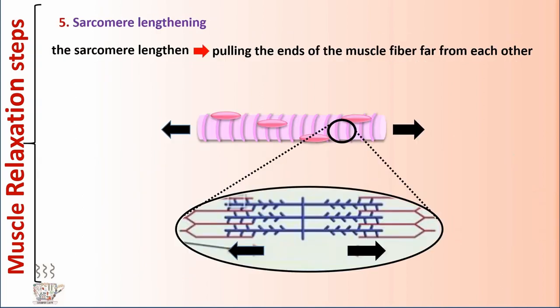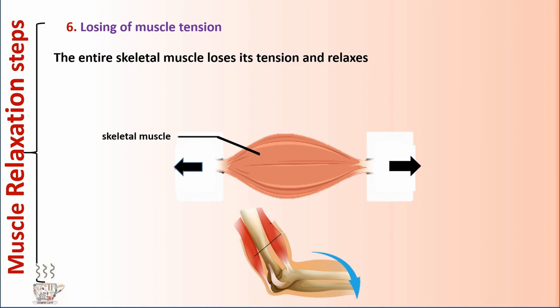Step 5: Sarcomere lengthening. The sarcomere lengthens, causing the ends of the muscle fiber to move far from each other. Step 6: Loss of muscle tension. The entire skeletal muscle loses its tension and relaxes.